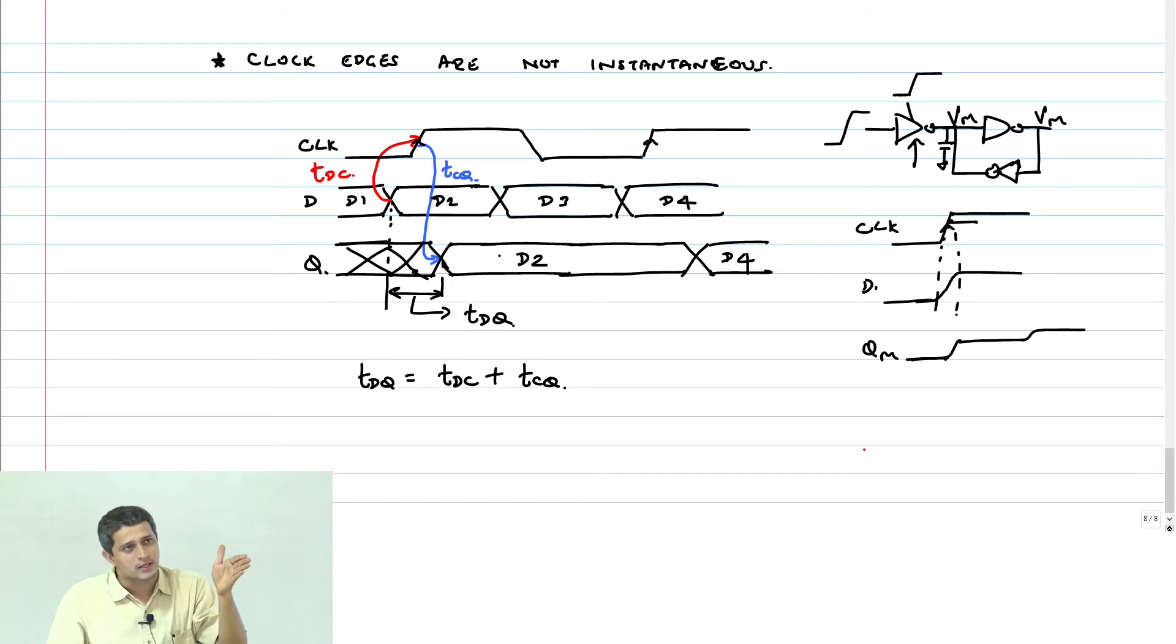In this example, D and QM are the same polarity. If I keep bringing this edge closer and closer, at some point this will go to the wrong value also. It can switch to the wrong value. This is completely wrong. This is correct, but it will happen with some delay.